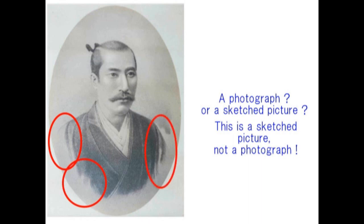この赤い丸で囲んだ部分に注意してください。ということは、もともとの織田信長の肖像画は存在した。それを明治時代に写真に納めた、ということになるのではないでしょうか。